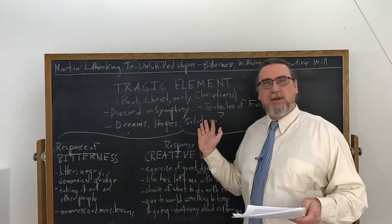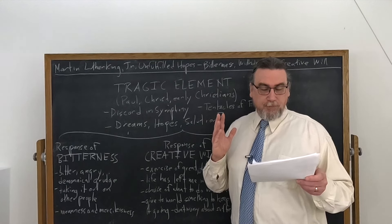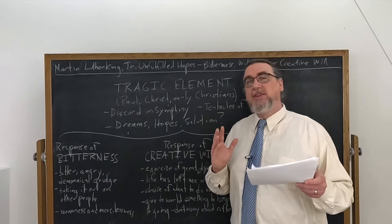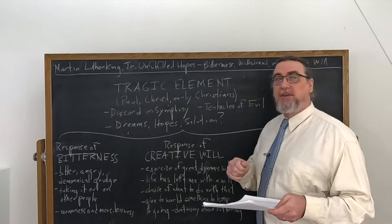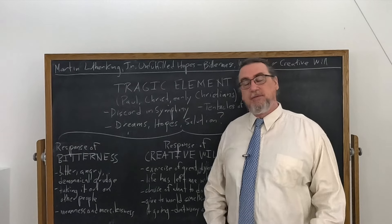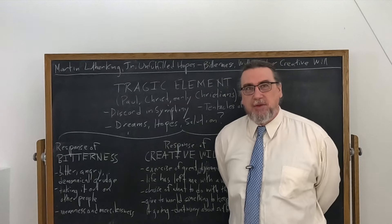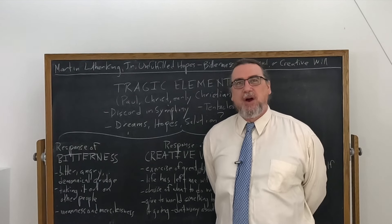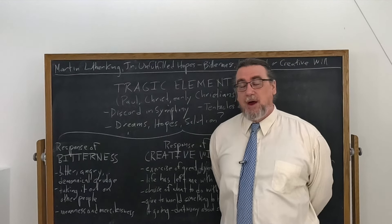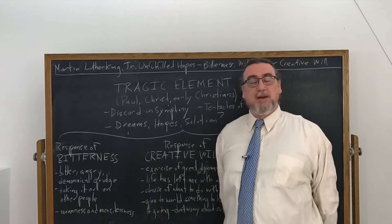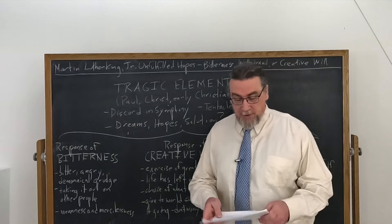He talks about evil. And so he tells us that the nagging prehensile tentacles of evil are always present, taking some of the meaning out of life. King knows there is genuine evil in the hearts and choices and actions and policies of human beings. He doesn't have any problem saying that this is the case. And so what do we find out?